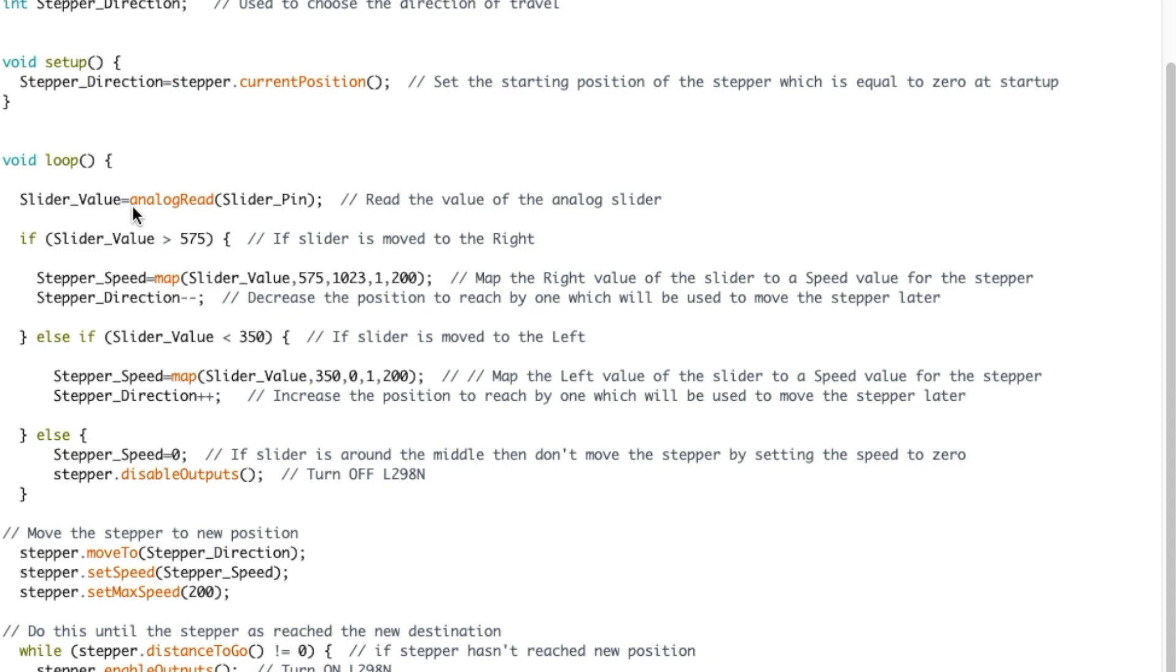So the slider value will be equal to the analog read of the analog slider. And then I check which value that is. And if the first one is greater than 575, which means I'm moving to the right, then I'm mapping that value to a speed of 1 to 200. So the more I'm pushing the analog slider to the right, the faster the stepper motor will move to the right. And then the stepper direction is equal to minus minus. So it was zero at the beginning. So minus minus, it will now be minus one. That means in the AccelStepper library, move to the right.